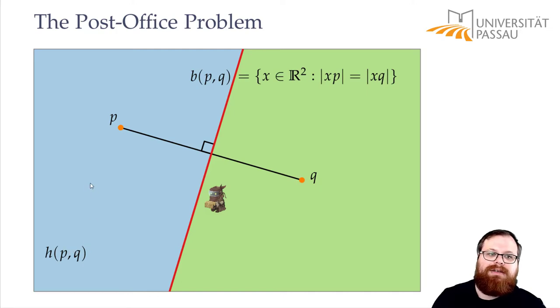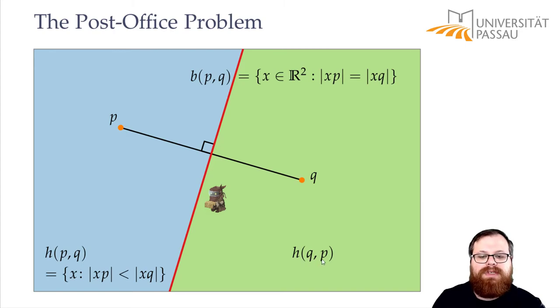So this is the half plane that is closer to P than to Q. Now this is all the points where the distance to P is smaller than the distance to Q. And this is the half plane that is closer to Q than to P. So this way we can define the regions if we only have two points. But what if we have more?